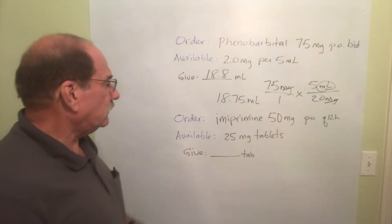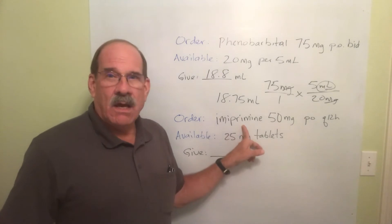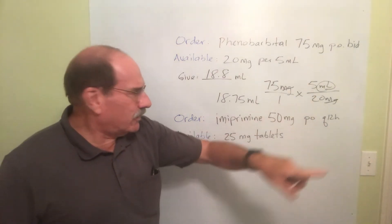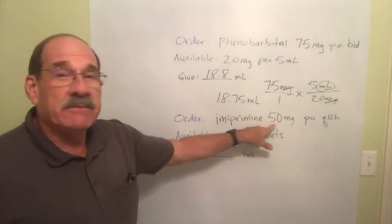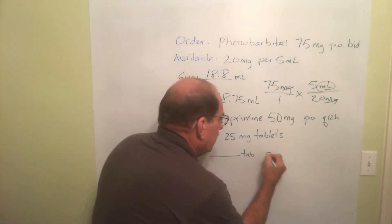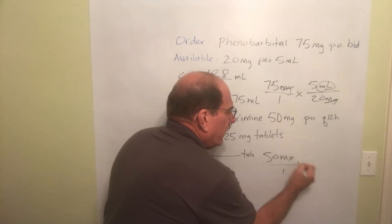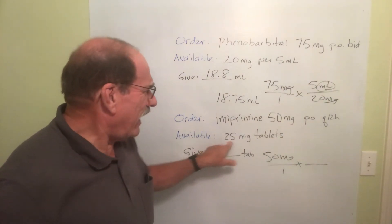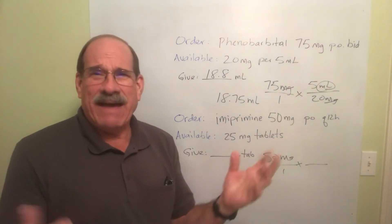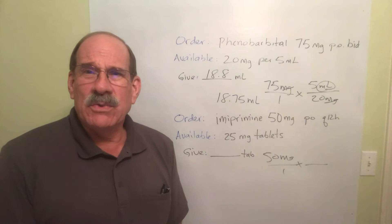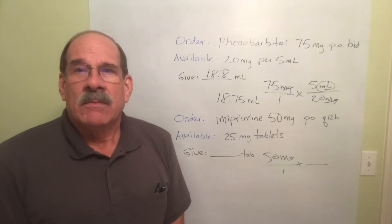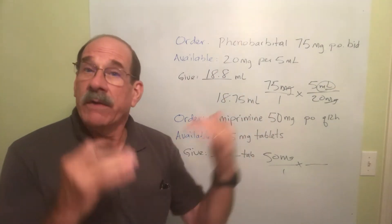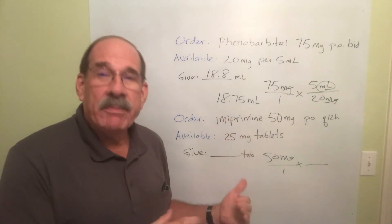What about this one? Imipramine — got to say it — imipramine. Fifty milligrams, PO Q12H, whatever that means. So I'm going to give 50 milligrams. Now, here's what I see people doing wrong. They think, well, I can do this in my head — 25 is half of 50, right? I give a half a tab. No. You don't do that. Don't do it that way. Because of where they are — set it up and do it right.